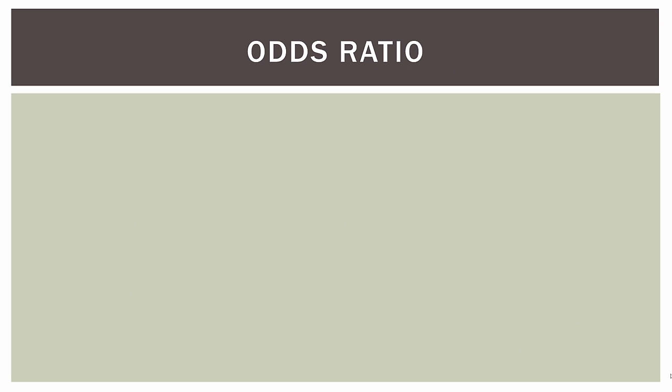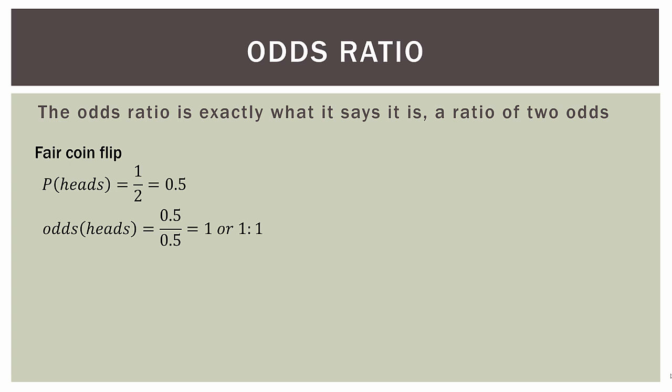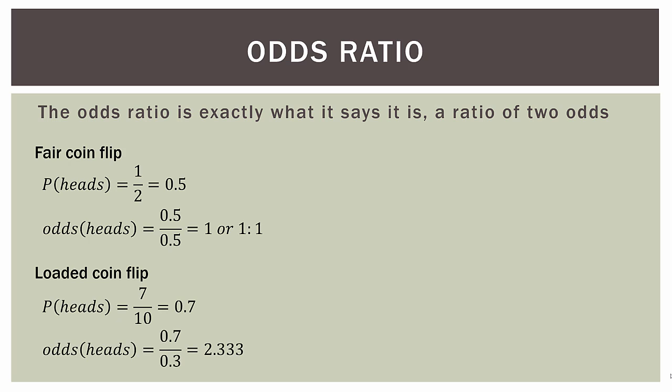Now we're going to talk about the odds ratio. The odds ratio is exactly what it says — it's a ratio of two odds. From our fair coin flip, the probability of heads is 0.5, and therefore the odds of getting heads is one, or one to one. Now let's say we have an unfair, or loaded, coin where the probability of getting heads is 0.7. The odds of getting heads is 0.7 divided by 0.3, which equals 2.333 repeating.